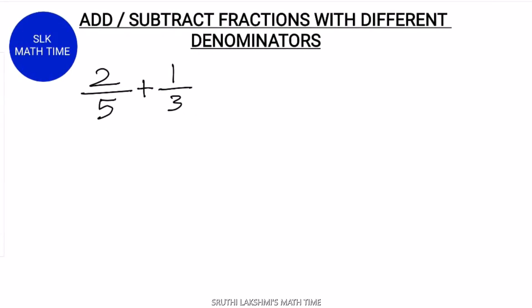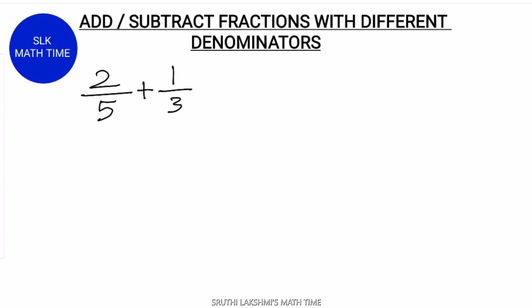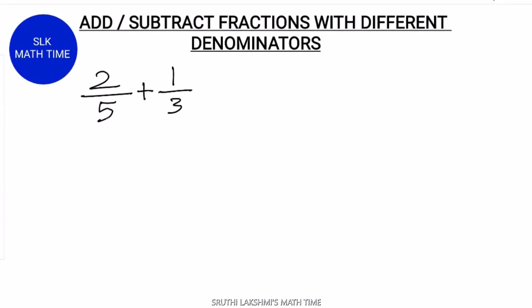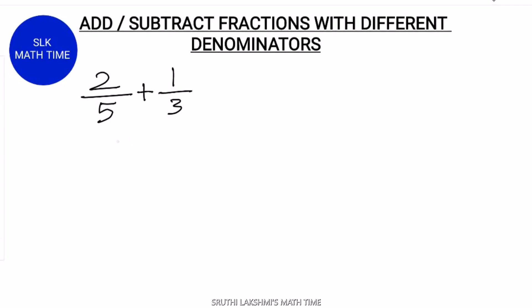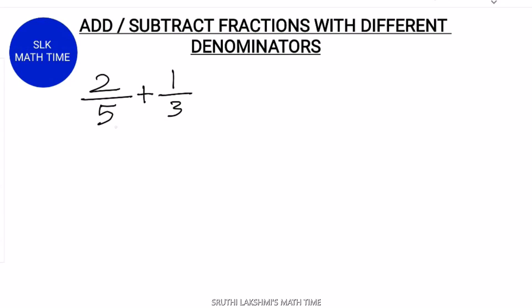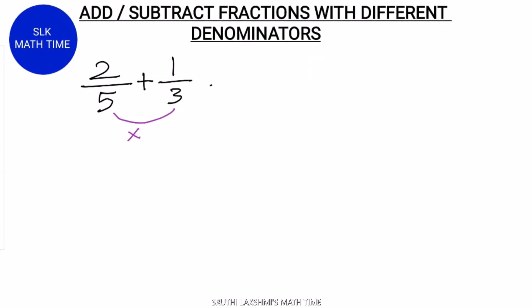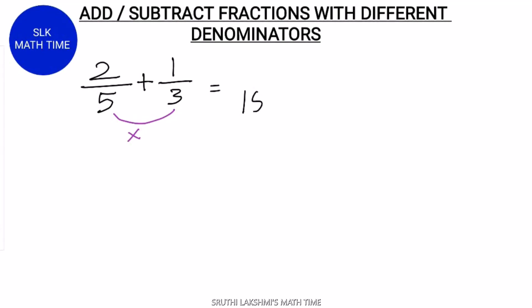Here both denominators are different. Since they both are different, we have to find the LCM of them. Since 5 and 3 are prime numbers, we multiply them. 5 into 3 is 15. So 15 will be the answer's denominator.